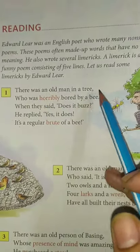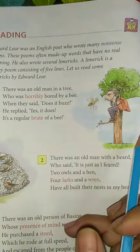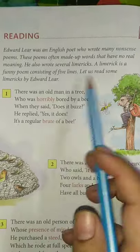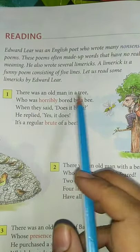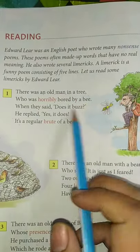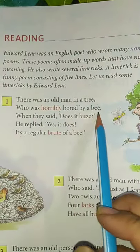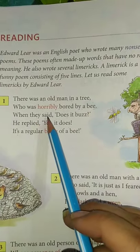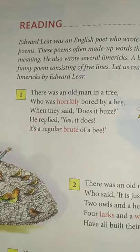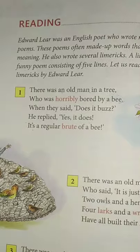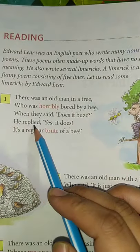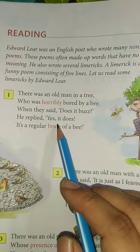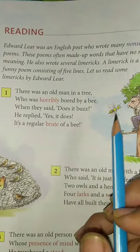So first one is: 'There was an old man in a tree.' In this picture you can see there is an old man on a tree. Ek old man — budha vyakti hai — jo tree ke upar baitha hua hai. 'Who was horribly bored by a bee?' — Vo buri tarah se dara hua tha ek madhumakhi se. 'When they said does it buzz?' — Tab aaspaas ke logon ne poocha, does it buzz? 'He replied yes, it does. It's a regular brute of a bee.' — Vo ek aisa janwar hai jo hamesha bee ki awaaz nikalta hai.